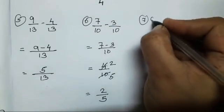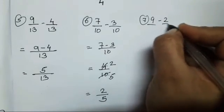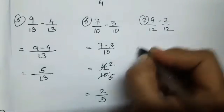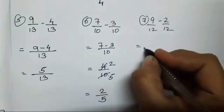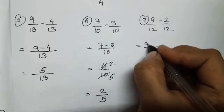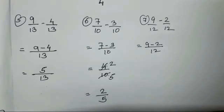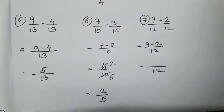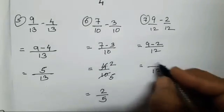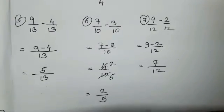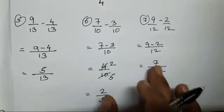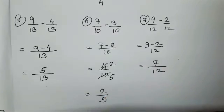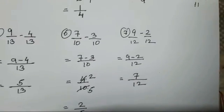The seventh sum is 9 upon 12 minus 2 upon 12. Denominator 12, 9 minus 2 is supposed to be 7 upon 12. Both the numbers cannot be divided with a single table, so let's keep it as it is. This is your answer.